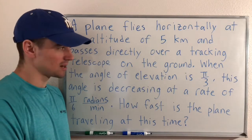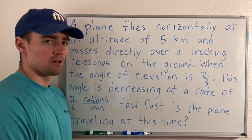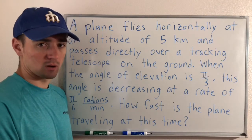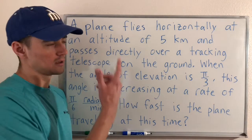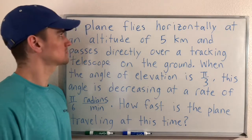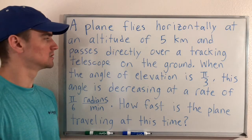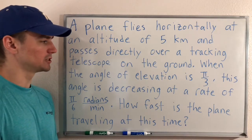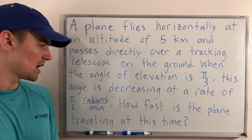Hey guys, Jake here with another math lesson. Continuing on the theme of related rates this week, today I have another related rates triangle problem — a changing angle problem within a triangle. We have a plane flying horizontally at an altitude of five kilometers that passes directly over a tracking telescope on the ground. When the angle of elevation is pi over three, this angle is decreasing at a rate of pi over six radians per minute.